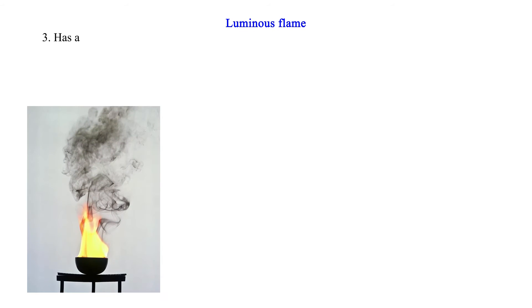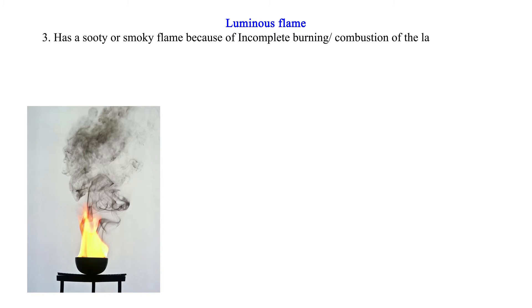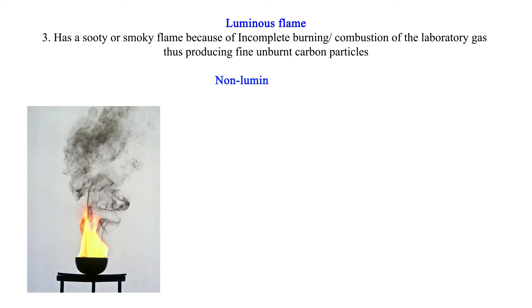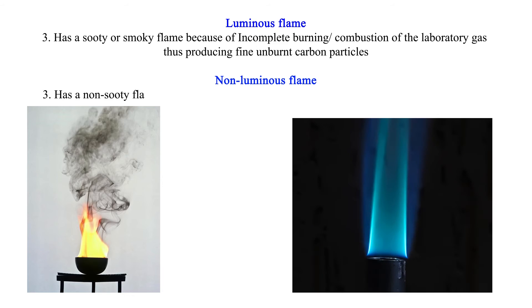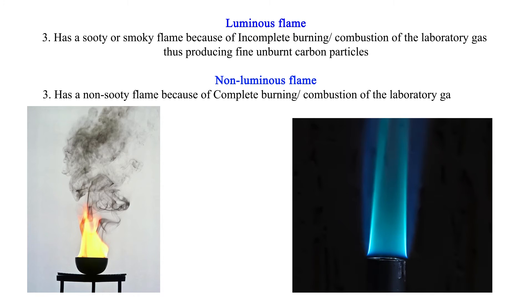Characteristic three: A luminous flame has a sooty or smoky appearance because of incomplete burning or combustion of the laboratory gas, thus producing fine unburnt carbon particles. A non-luminous flame has a non-sooty flame because of complete burning or combustion of the laboratory gas, which does not produce carbon particles.